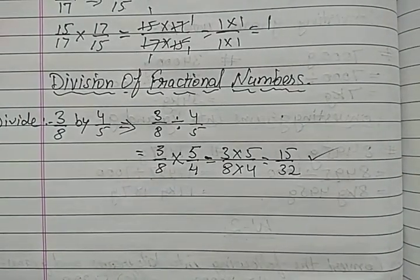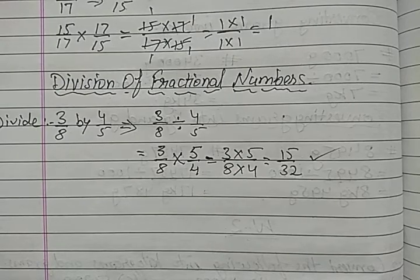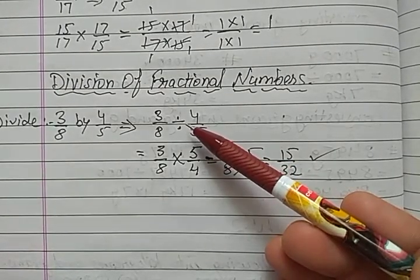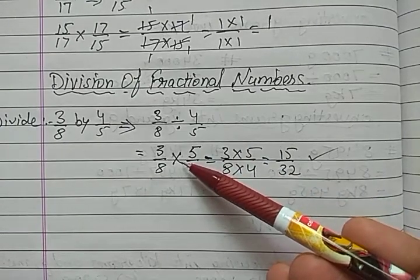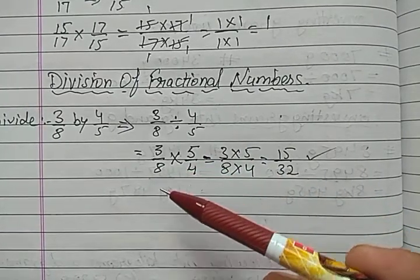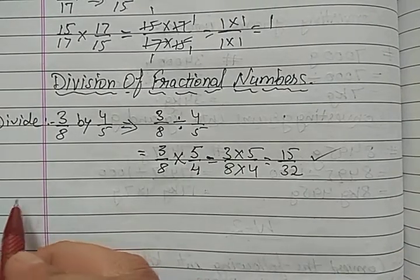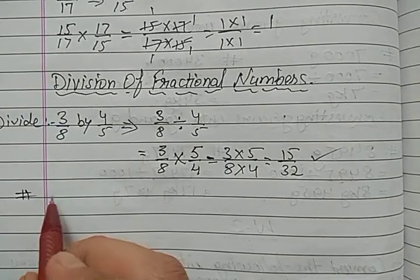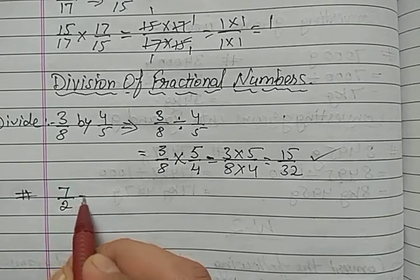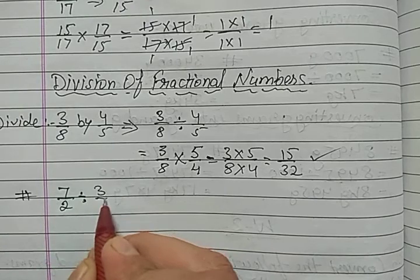In this way we can divide the given fractional numbers. The first step is to convert the division sign into multiplication sign — remember this step. Let us take one more example: divide 7 upon 2 divided by 3 upon 5.